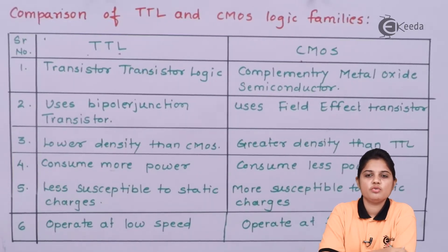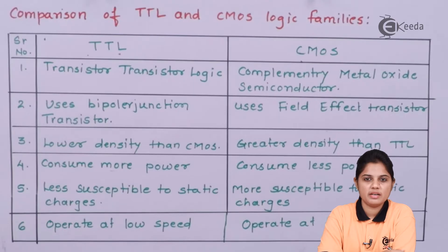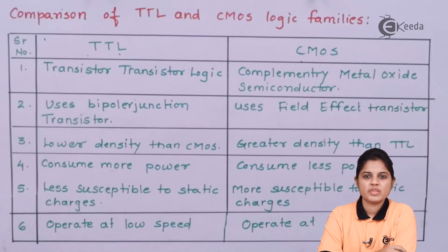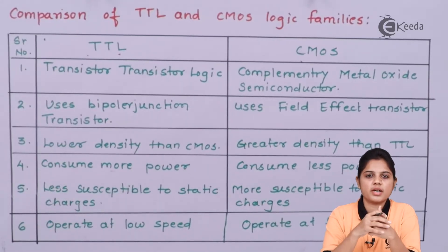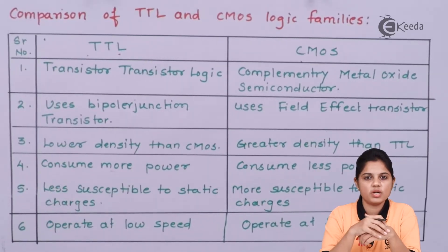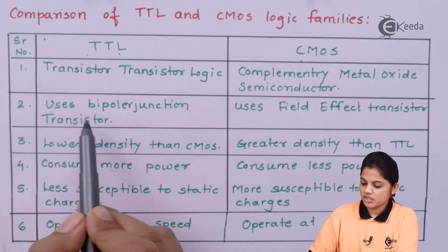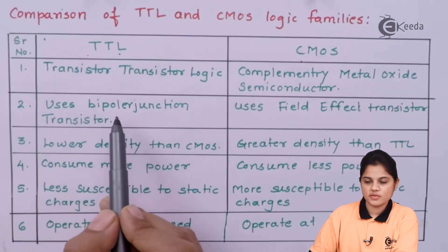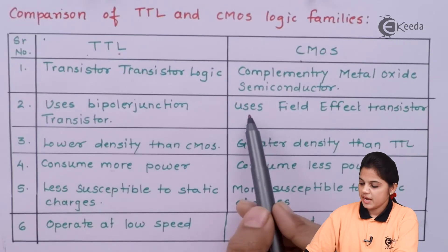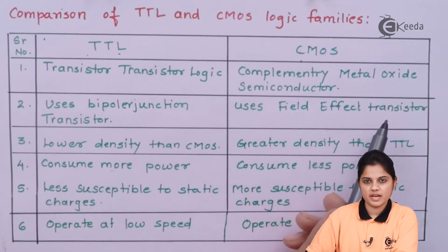The major component used in CMOS is the Metal Oxide Semiconductor Field Effect Transistor. Both are different devices: the transistor is a current-controlled current device, while the FET is a voltage-controlled current device. TTL uses Bipolar Junction Transistors and CMOS uses Field Effect Transistors, and both work differently.